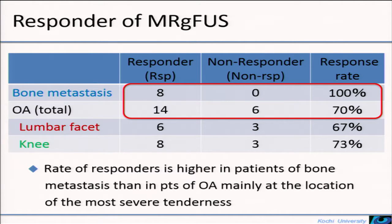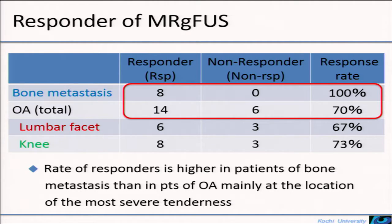The rate of responders in bone metastasis was higher than that of osteoarthritis. This is probably because the pain etiology was different between the two diseases. In bone metastasis, irritated nerve fibers due to fragile bone and inflammatory cytokines caused by cancer were probably the main causes of pain. While in osteoarthritis, not only sensitized nerve fibers but also synovium, tendon, and other structures outside the treated site were possibly contributing to pain.